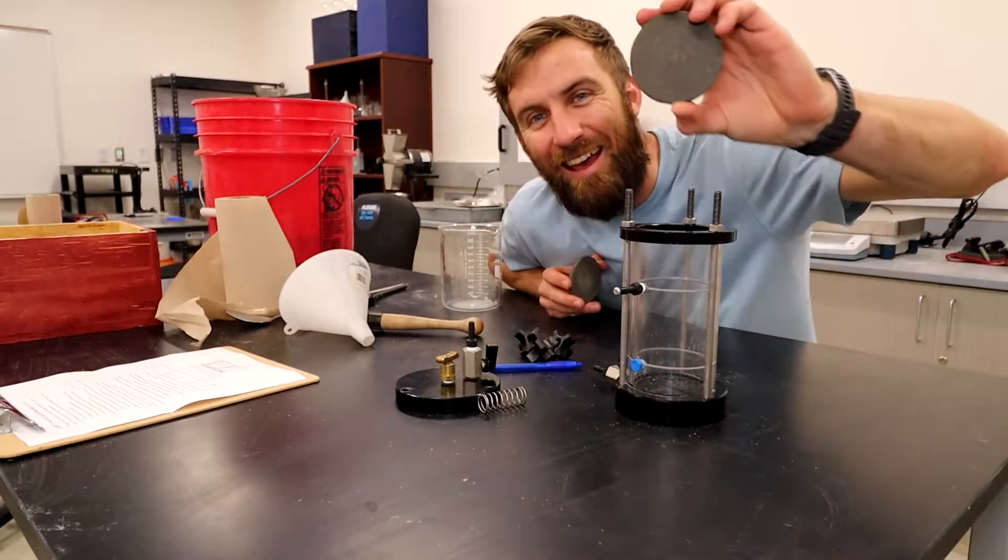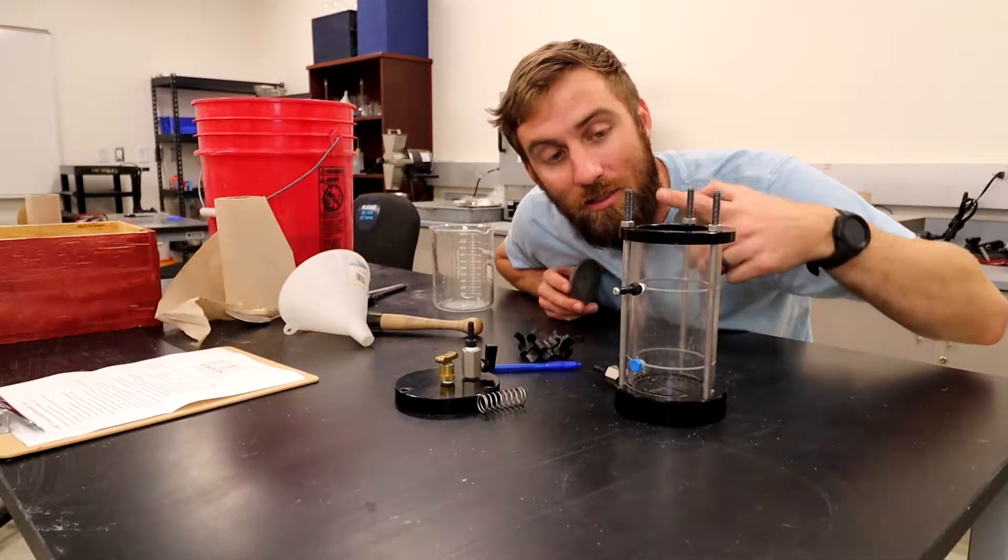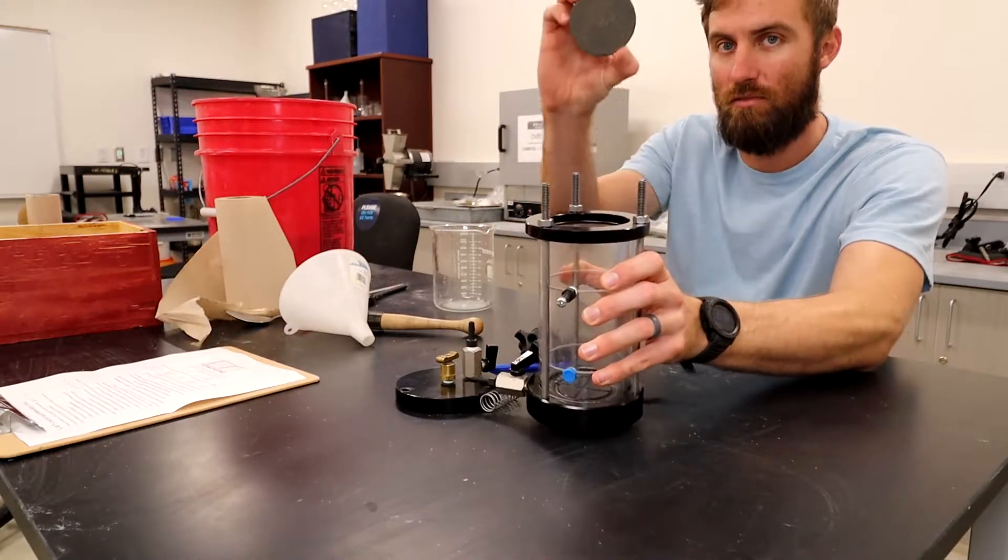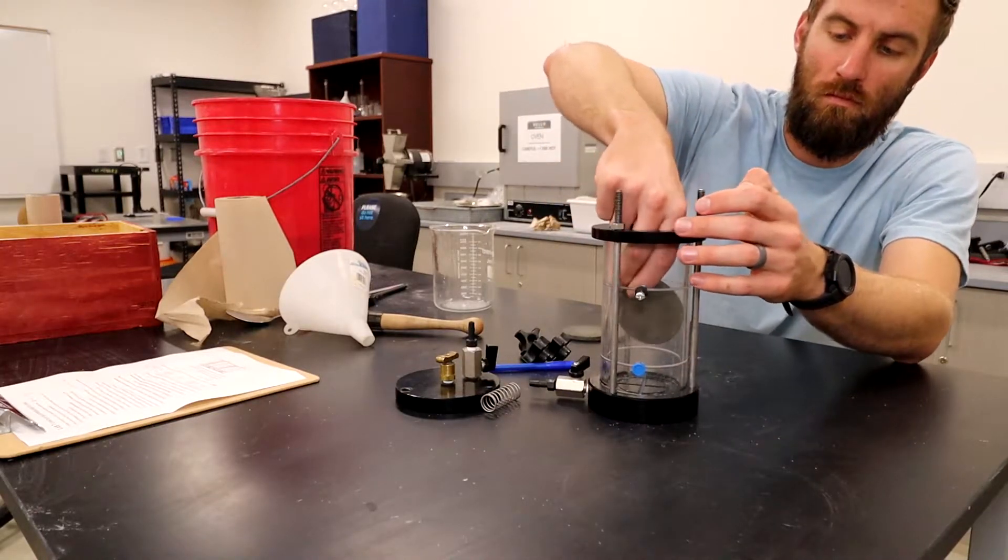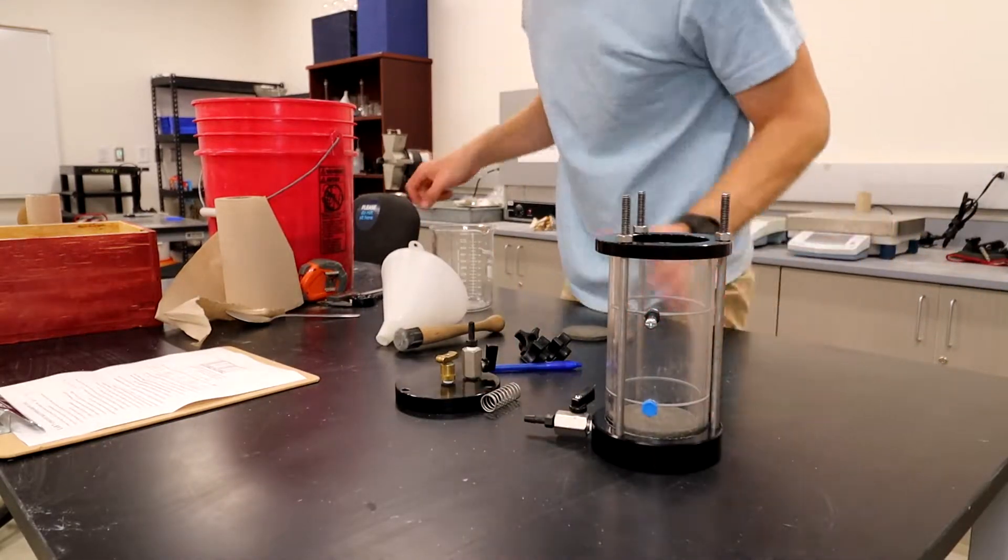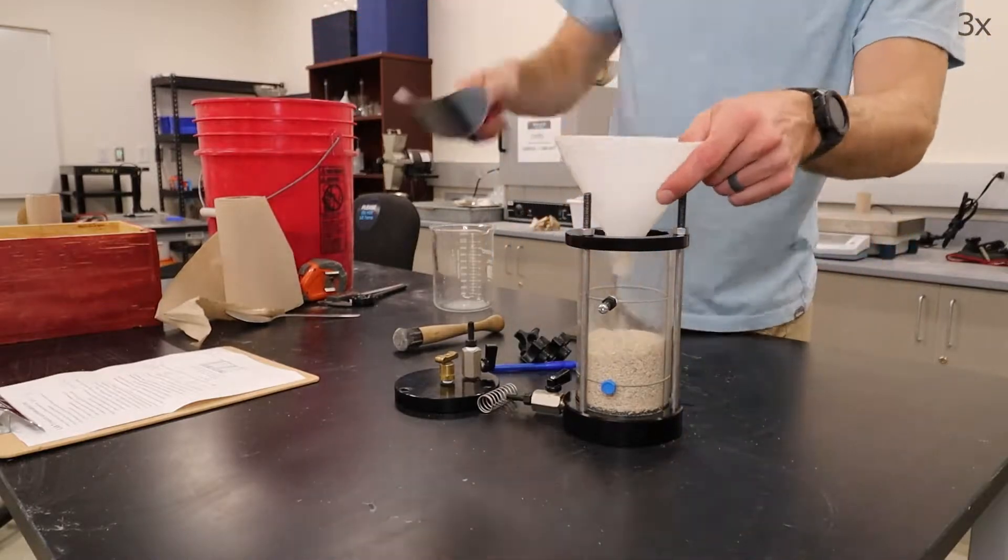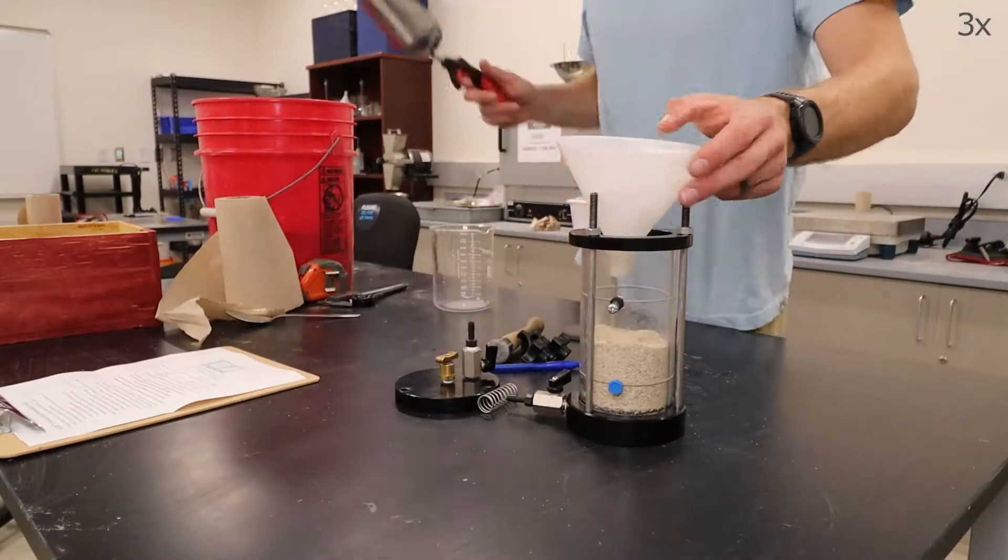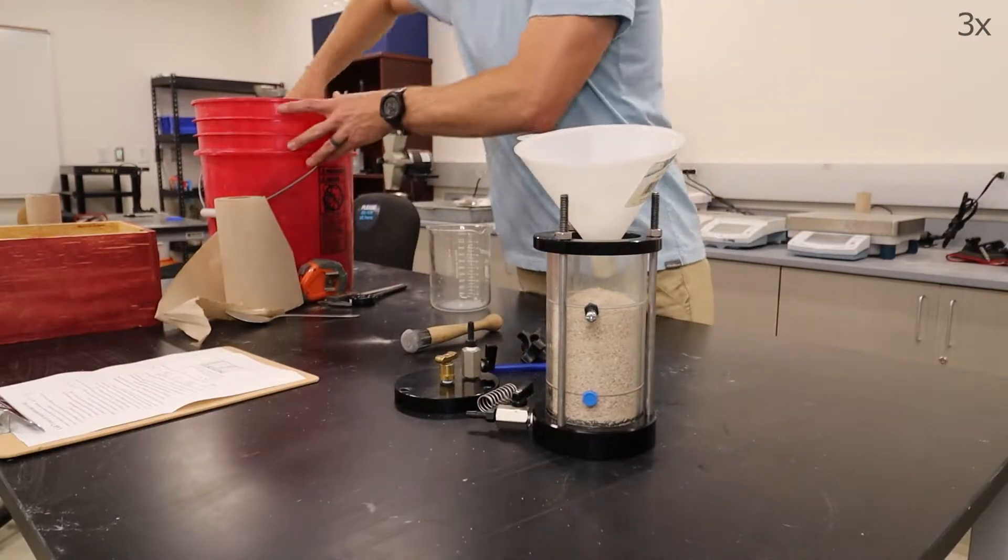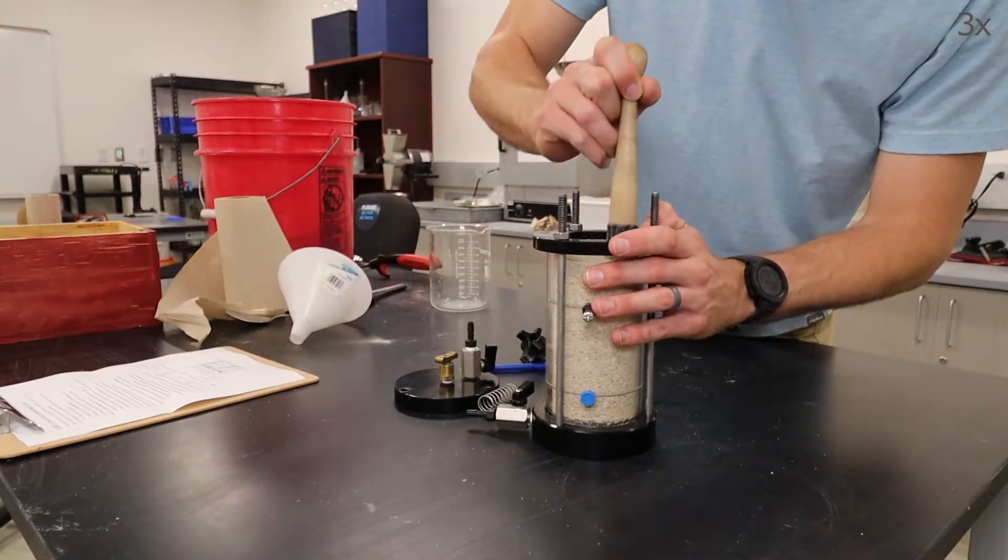Almost forgot - we need to put a porous stone in there first. This is really important because if we don't have this porous stone here, soil particles are going to be able to flow out and clog the bottom nozzle, and that's not going to be good. So this needs to go in first.